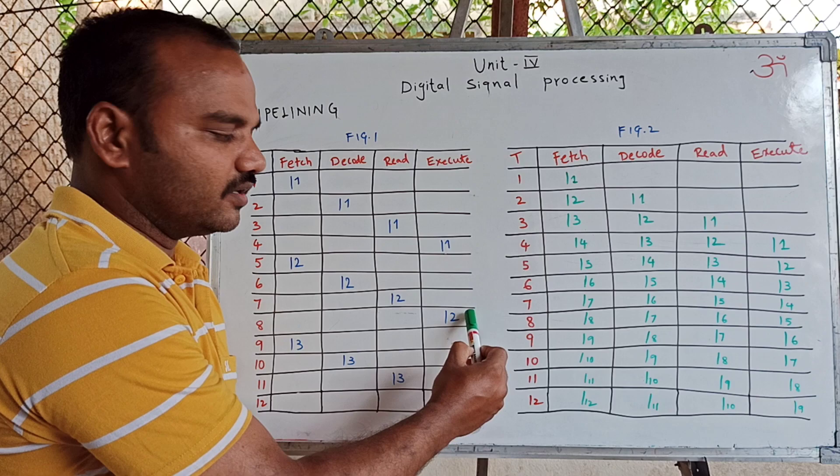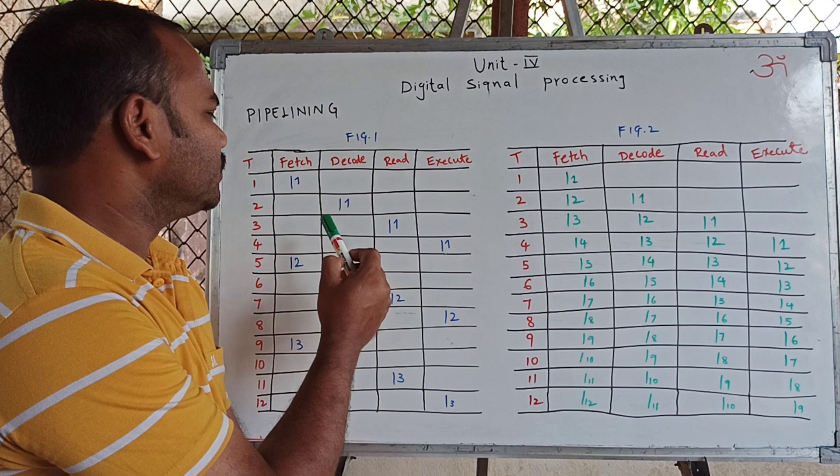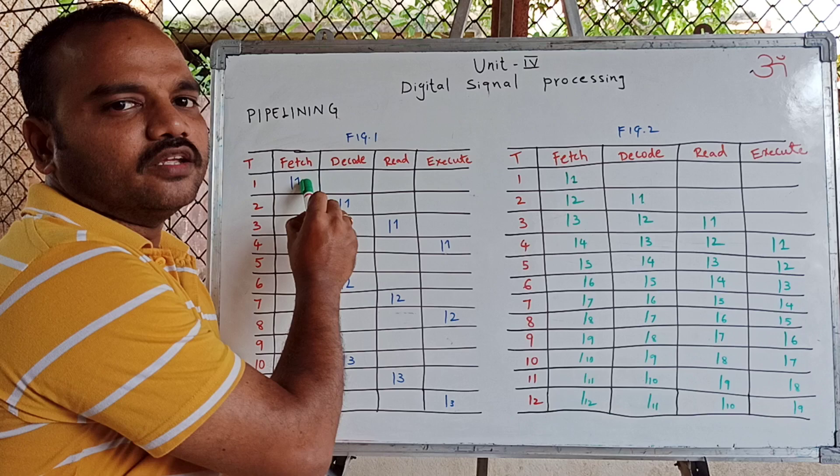After another four clock pulses, instruction L2 is executed. After another four clock pulses, instruction L3 is executed. We can observe that only one unit is active at any given point of time.